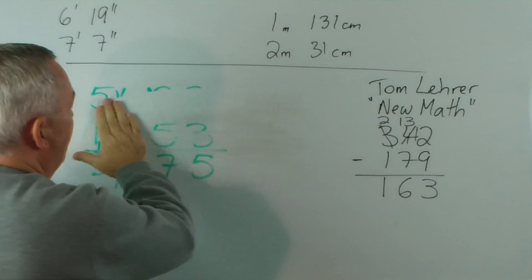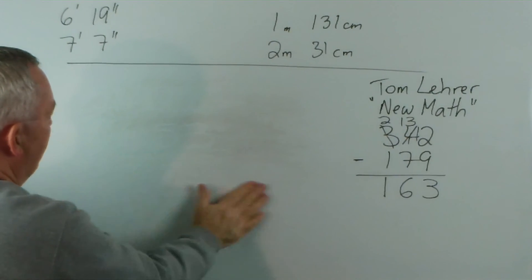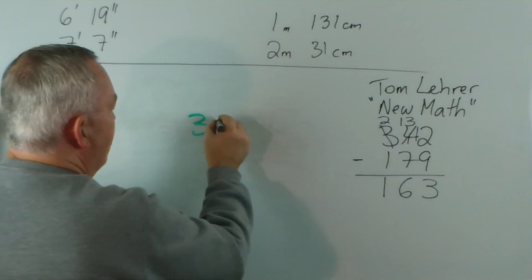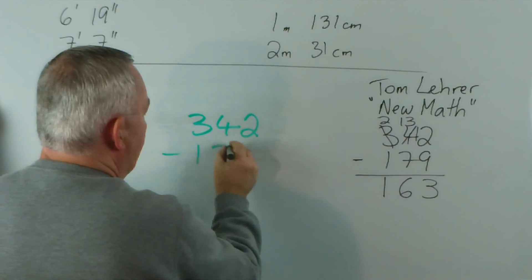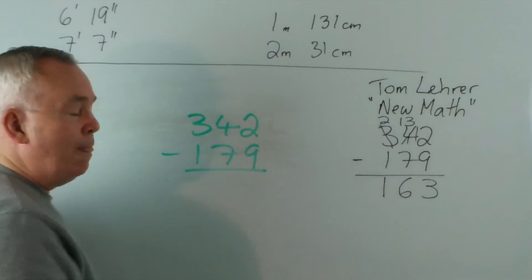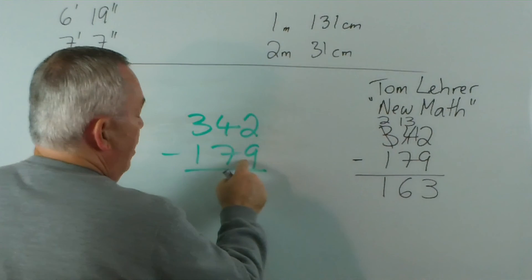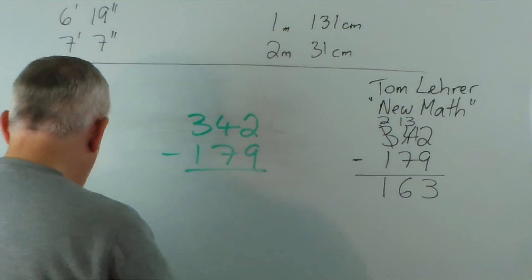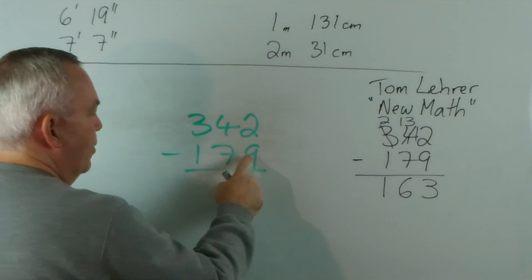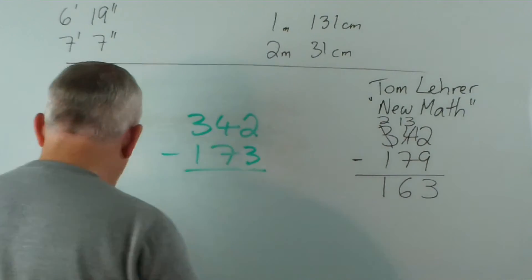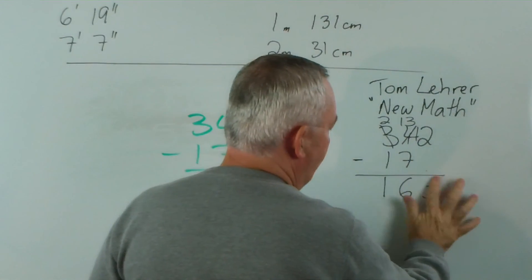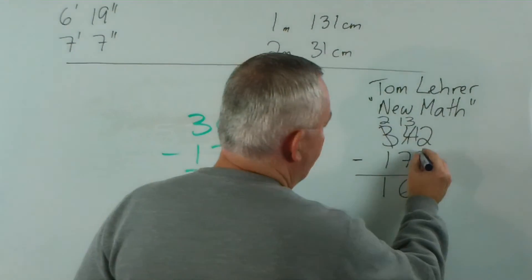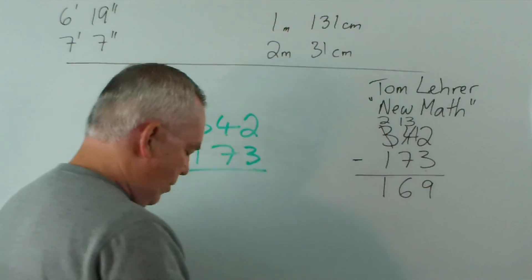Now, if ... I was hoping this would rub off fairly well ... if we did perform this sum ... 342 minus 179 the old way ... we can't take 9 from 2 ... what is it ... oh dear ... I did the wrong sum ... the 173 ... I've got it written down here ... I'll have to fix this up ... that's a shame ...